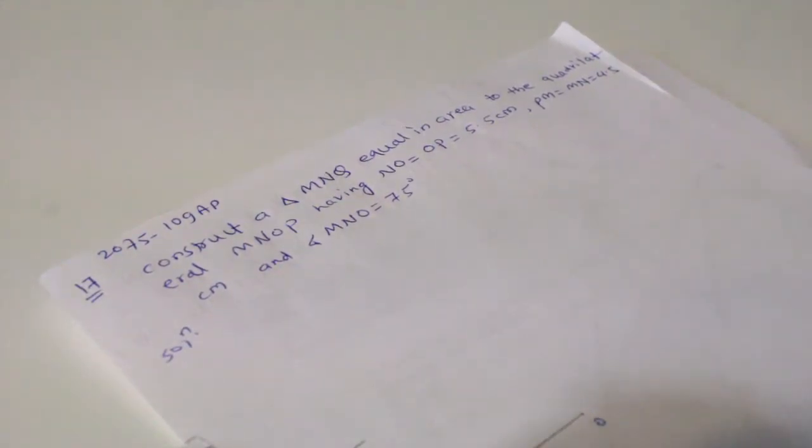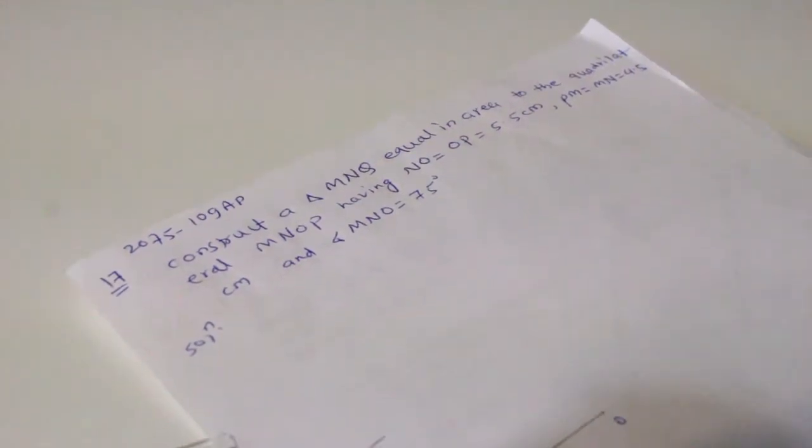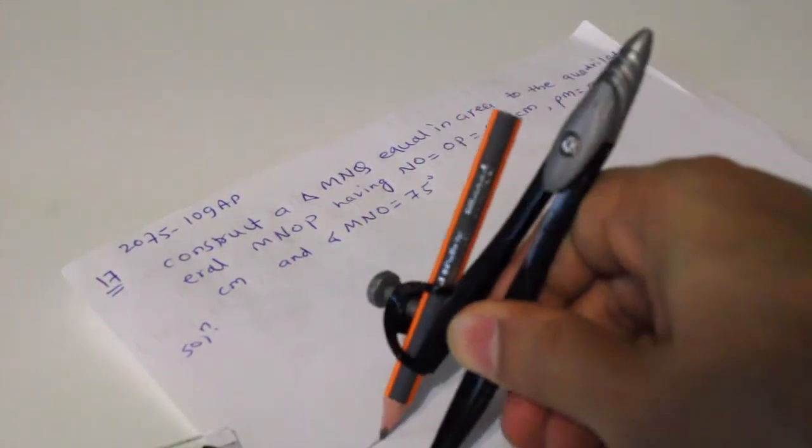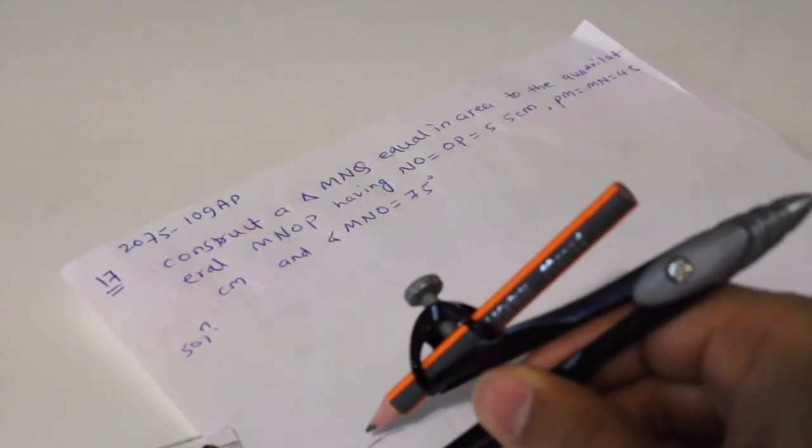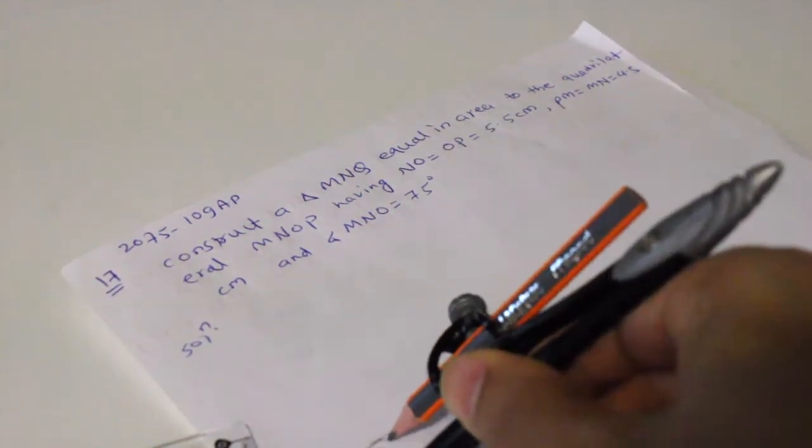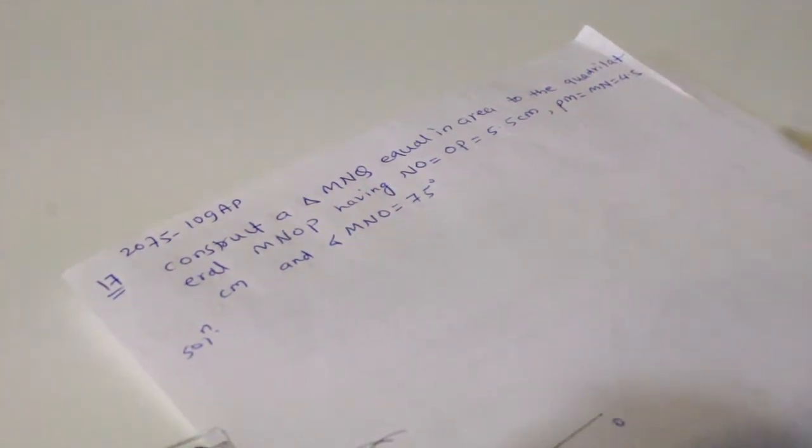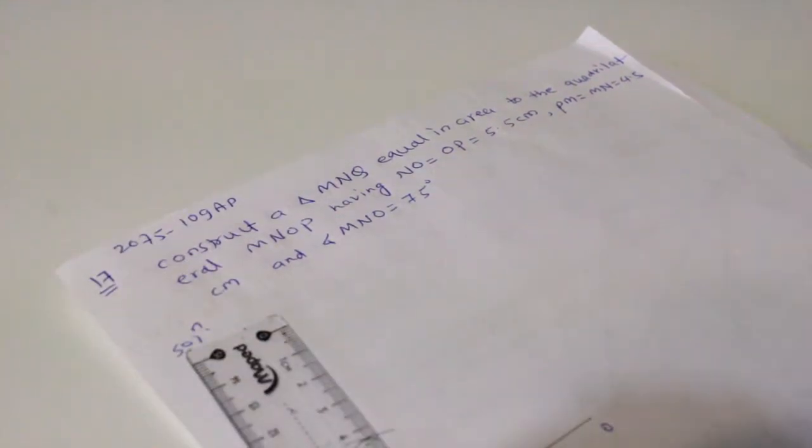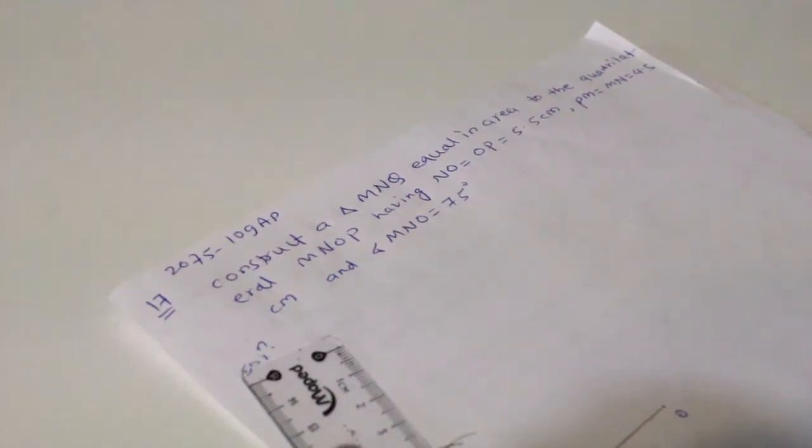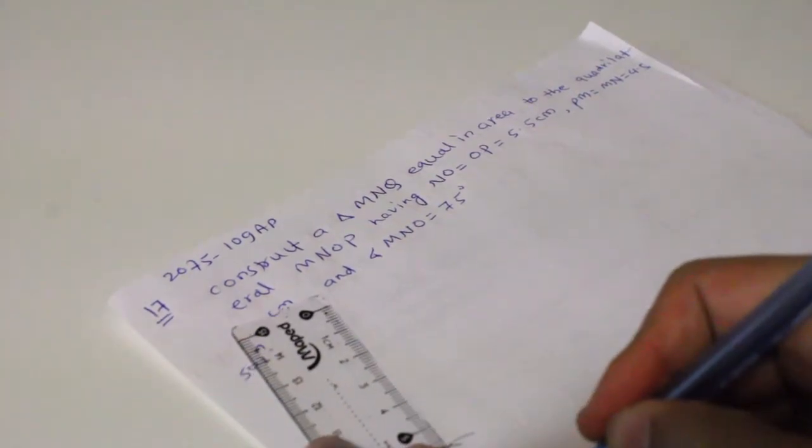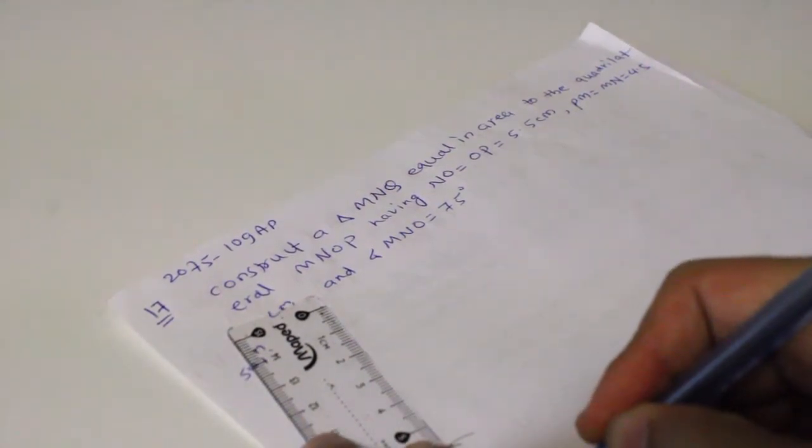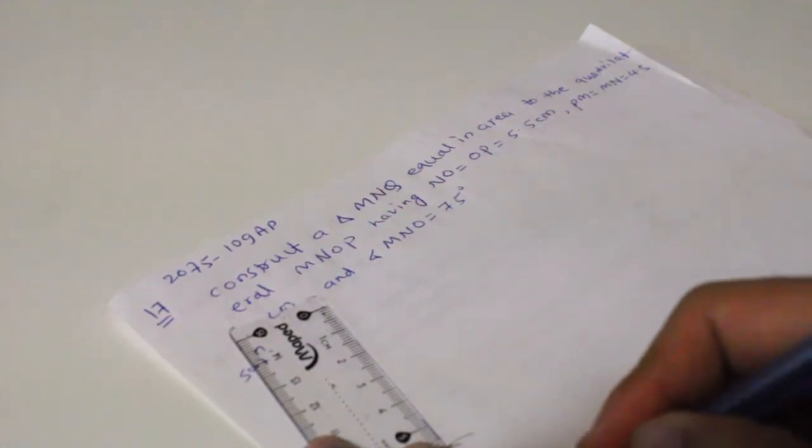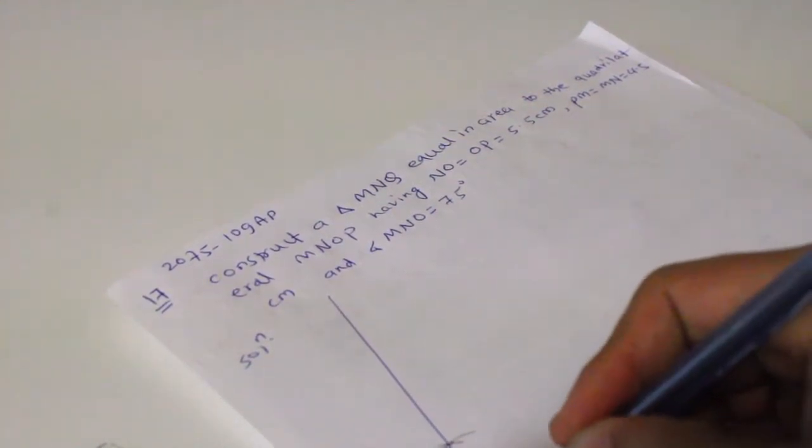So this is 90. Now from 90 and 60, don't flip this arc, you can just use the same arc. Don't change it. Using 60 and 90, you are marking another one, which is 75. Now let me draw the long line, very long line, marking these two angles. This angle is 75.